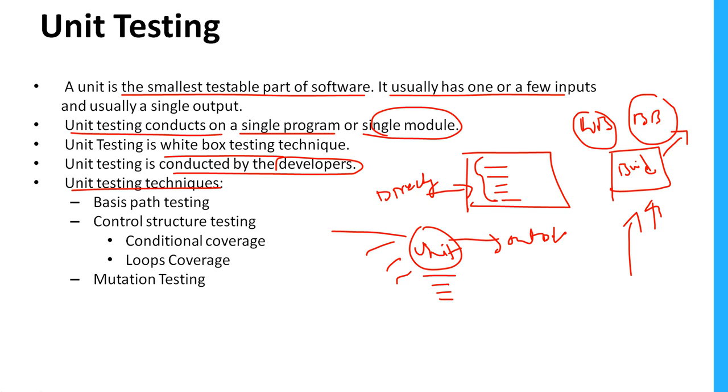Basis path testing: suppose we have a small code. When I run this program, we need to test that at least each and every line should execute at least once. We have to provide certain input so that each and every line executes at least once. That's called basis path testing - all the flow should be executed.